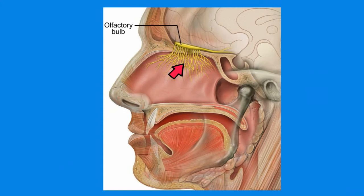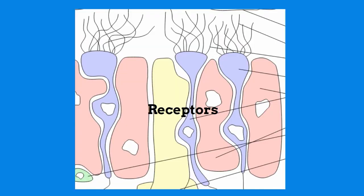The olfactory epithelium contains mucus which traps these odorants, and this activates receptors found in the olfactory epithelium.